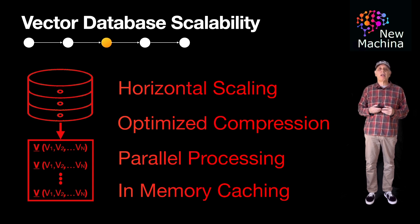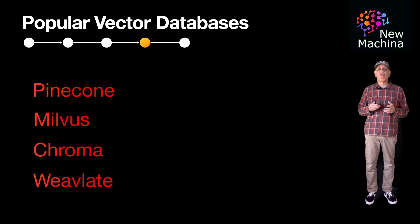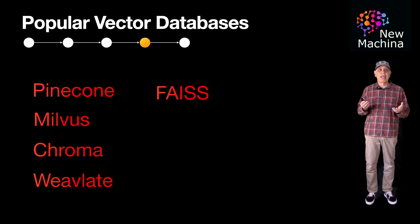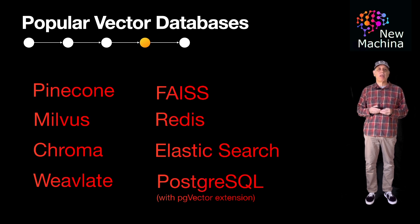This is not an exhaustive list, but here are some of the more popular vector databases available today. Pinecone, Milvus, Chroma, and Weaviate are all well-funded startups that provide specialized vector database offerings. FAISS is a Facebook similarity search open source system which is getting good adoption. Legacy data store providers Redis, Elasticsearch, and PostgreSQL have all added extensions to support vectors. As this space evolves over the next few years, we'll get a better feel for which systems become more popular and which wane.